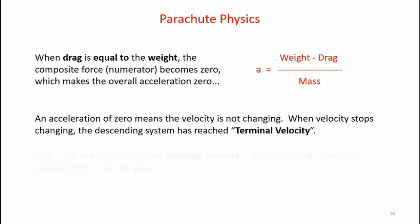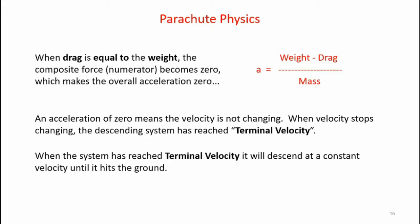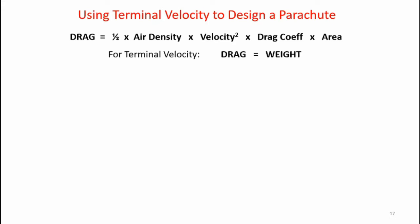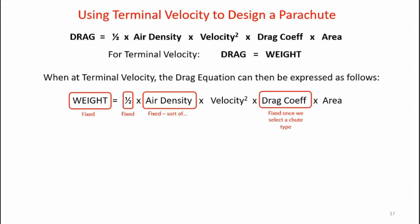When the system has reached terminal velocity, it will descend at a constant velocity until it hits the ground. Now let's use this concept of terminal velocity to design a parachute. Here's the drag equation: drag equals one-half air density times velocity squared times drag coefficient times area. For terminal velocity, drag equals weight. Weight is fixed, one-half is a constant, air density is assumed fixed at the impact altitude, and the drag coefficient is fixed once we select the parachute type. What's left is to calculate the area to give us our desired impact velocity.